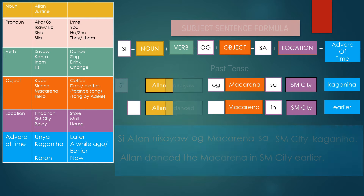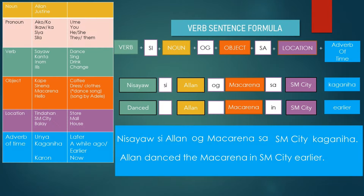For the verb sentence formula, all we need to do is put the verb at the very beginning of the sentence. So our sentence becomes: Ni Sayaw, Si Alan, Og Makarena, Sa SM City, Kaganiha. That means: Alan danced Makarena in SM City earlier.